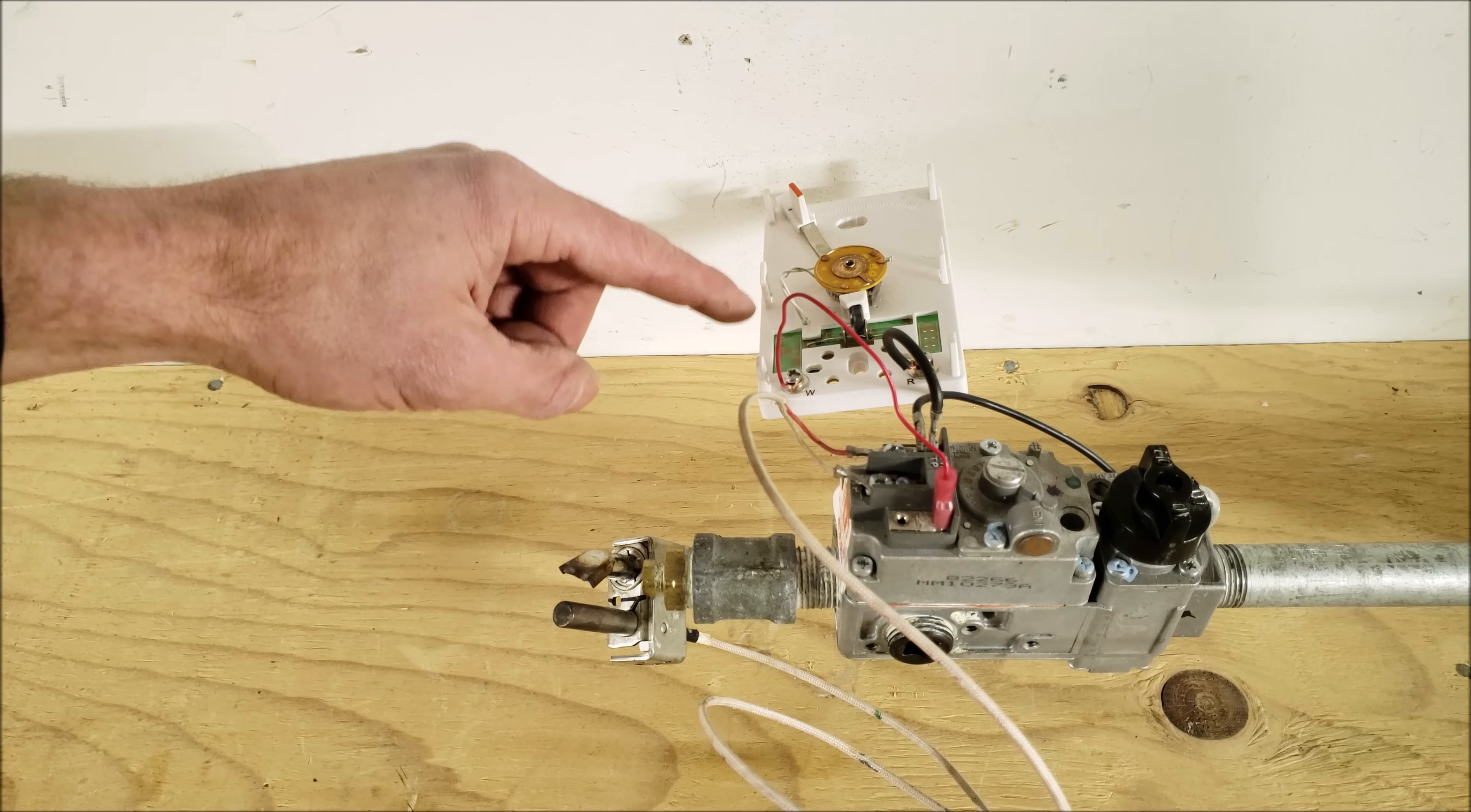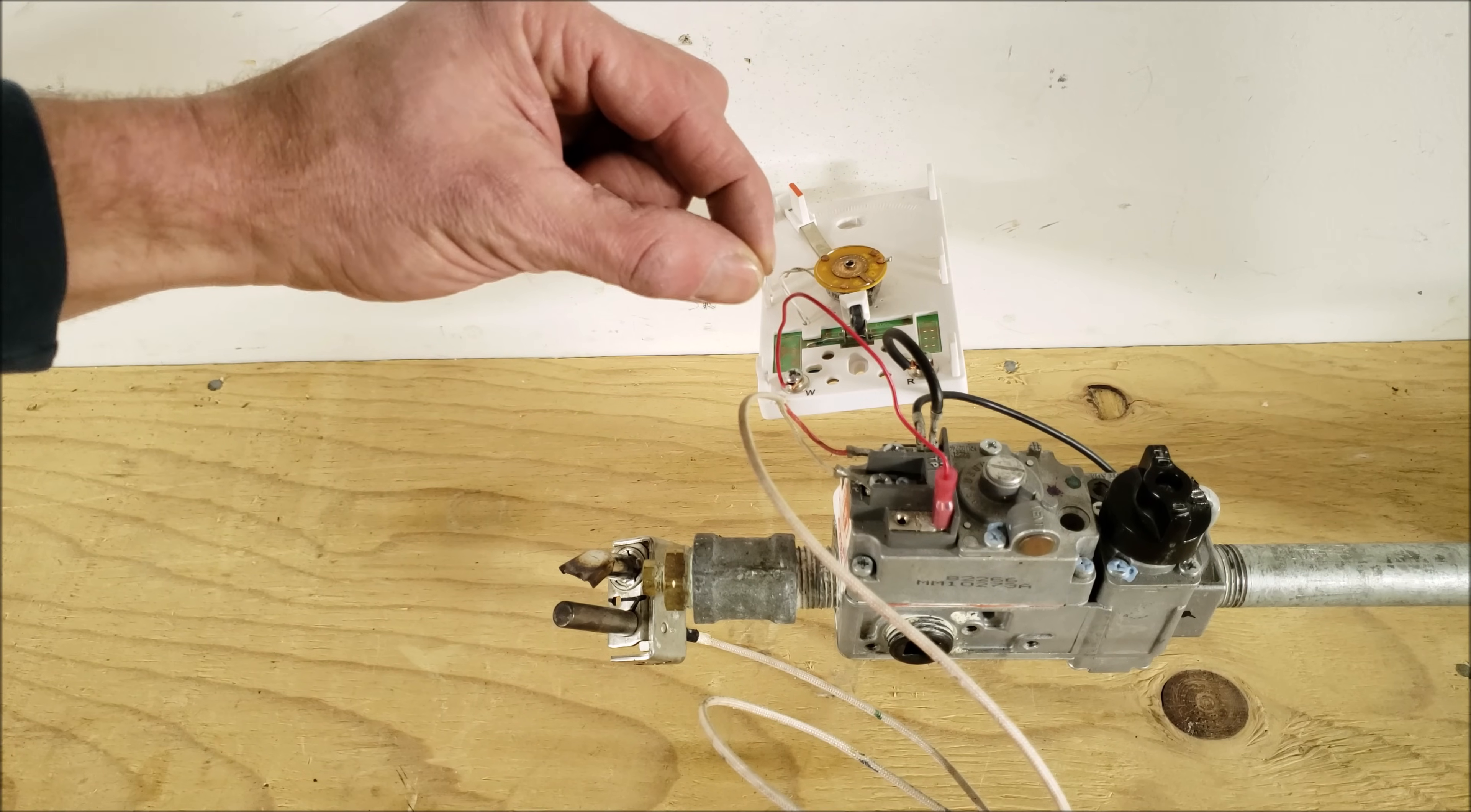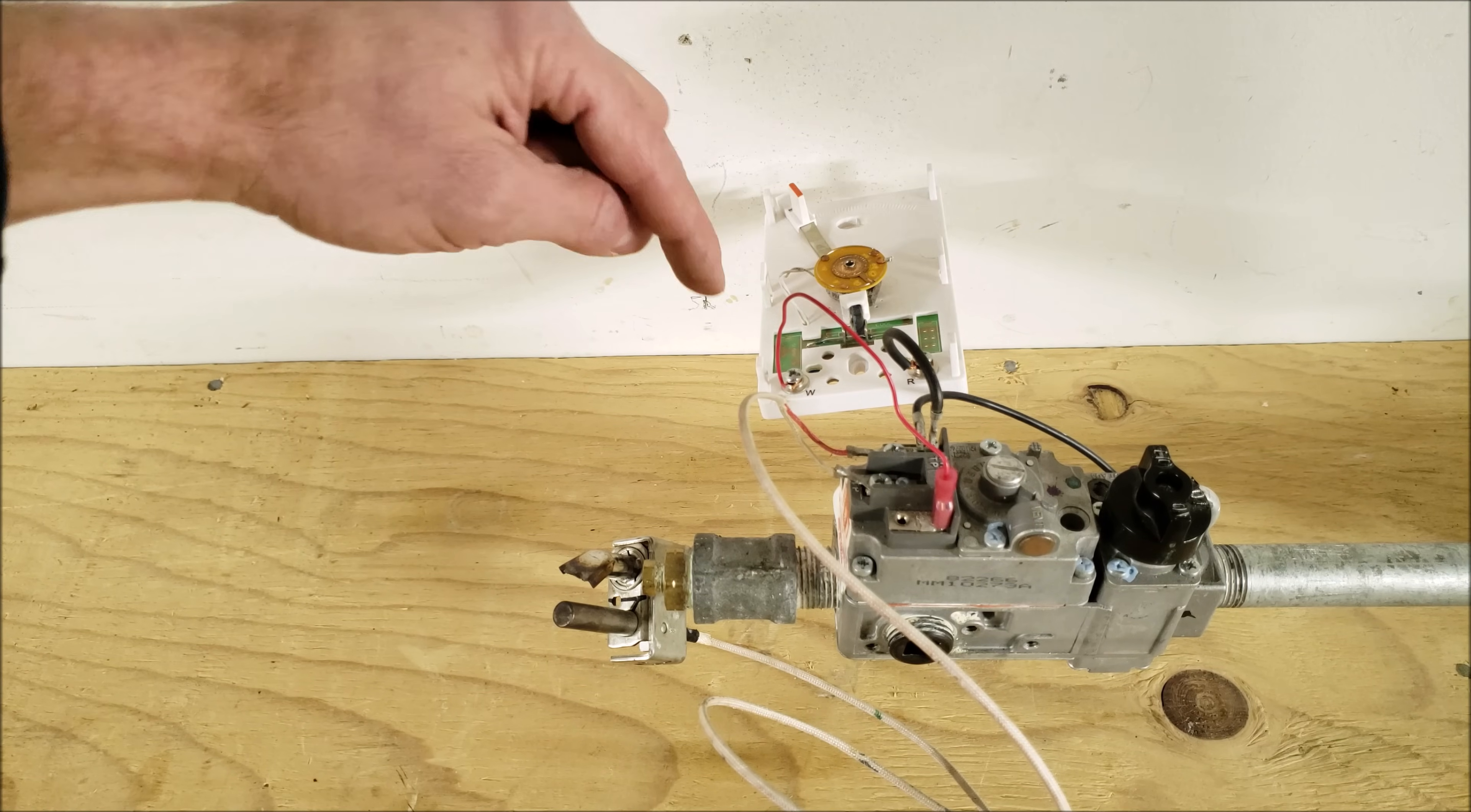Now it's important to use a thermostat that's rated for 750 millivolts because the connection has to be very tight so it can't have any resistance. Otherwise you're going to lose your millivolts and you may not have enough to power the main gas valve.